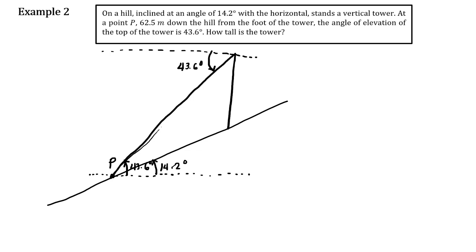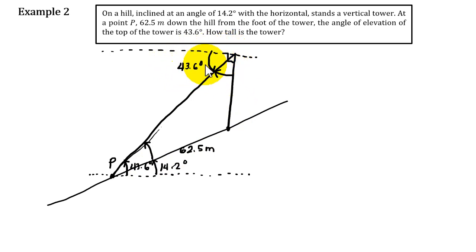Since this is a vertical tower, the whole measurement here is 90 degrees, so we can solve for the interior angles of our triangle. We solve one angle by subtracting 14.2 degrees from 43.6 degrees, and we solve the other by subtracting 43.6 degrees from 90 degrees.